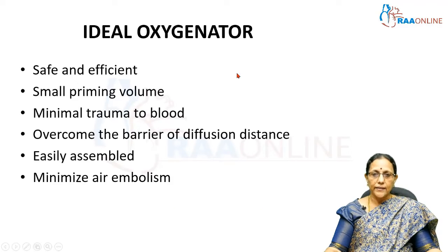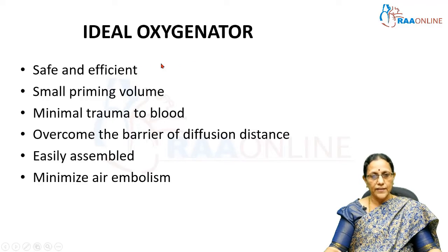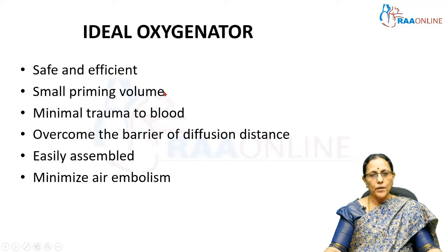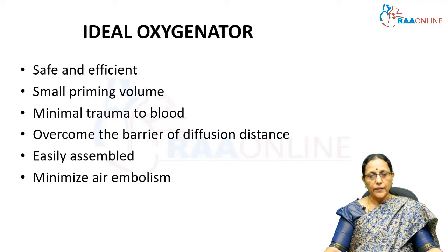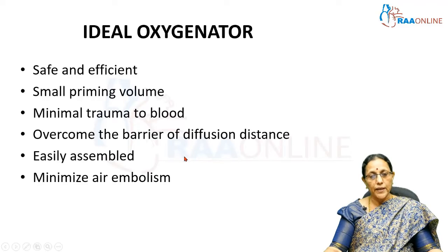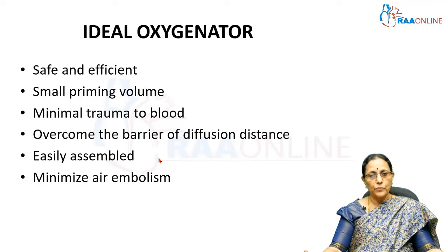What are the ideal characteristics of an oxygenator? First of all, it should be safe and efficient. It should have a considerably smaller priming volume so that there is minimum hemodilution of the patient. It should not create trauma to the blood, and it should overcome the barrier of diffusion distance — that is, the distance between the gas and the blood phase should be as minimum as possible. It should be assembled easily in case of emergencies and the hands-on work should be done with ease.